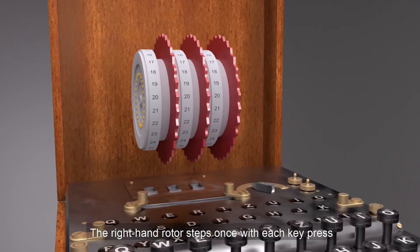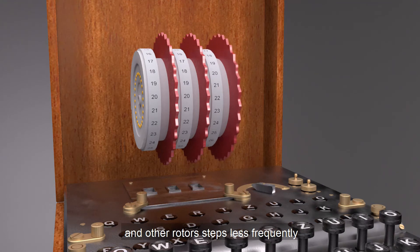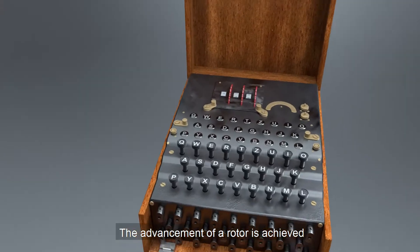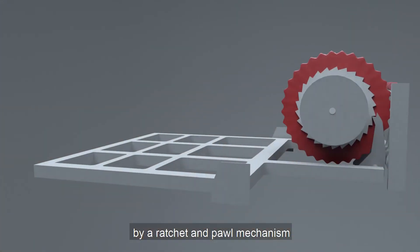The right-hand rotor steps once with each key press, and other rotors step less frequently. The advancement of a rotor is achieved by a ratchet and pawl mechanism.